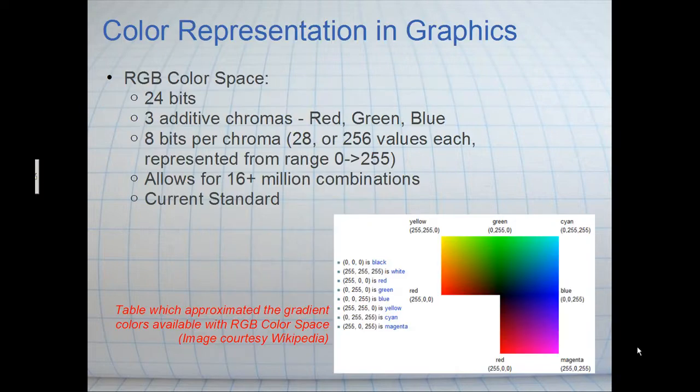So pixels are represented with three components. And those three components are the red, green, and blue components. And we call this component system the RGB color space scheme. Each color, red, green, and blue, is given 8 bits, which allows for 2 to the 8th, or 256 values each.